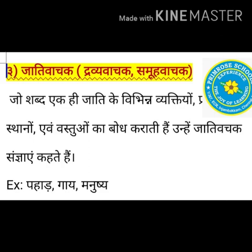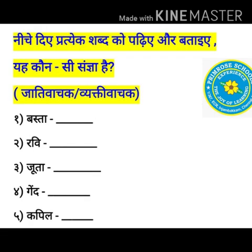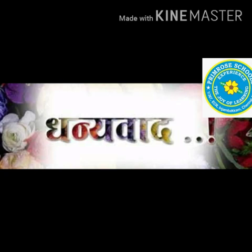Dravya vachak and Samooh vachak are subtypes of Jati vachak. Now comes the assignment, children. Neeche diye pratyek shabd ko padhiye aur bataiye ye konsi sangya hai. You can select between Jati vachak and Vyakti vachak. 1. Basta, 2. Ravi, 3. Juta, 4. Gai, 5. Kapil. Select the right answer and send it back. Have a great day, thank you.